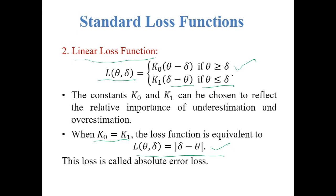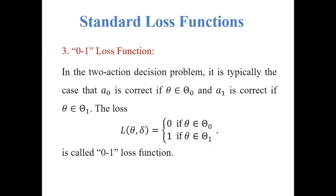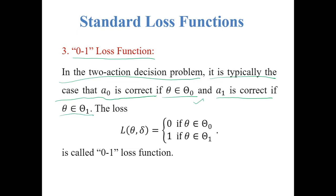When K0 and K1 are considered as functions of the parameter, we call this the weighted linear loss function, which also has importance in estimation theory. The third loss function is the zero-one loss function, arising in the two-action decision problem where action a0 is correct if theta is in subset theta-0 and action a1 is correct if theta is in theta-1. The loss function is defined as 0 if theta is in theta-0 and 1 if theta is in theta-1. Its application is usually found in testing of hypotheses and selection problems.